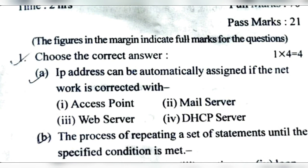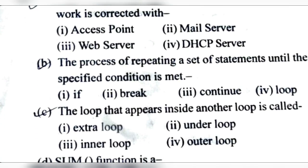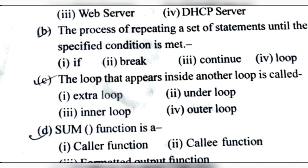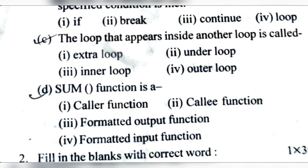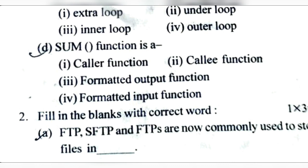MCQ: Number 1 — An IP address can be automatically assigned if the network is connected to a DHCP server, so the answer is option 4. Number B — The process of repeating a set of statements until a specific condition is met, the correct answer is option 4. Number C — The loop that appears inside another loop is the inner loop. Number D — The main function is called the callee.